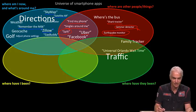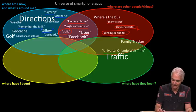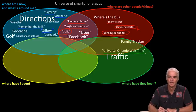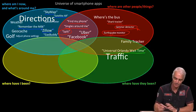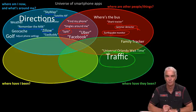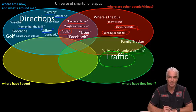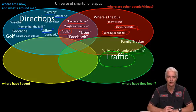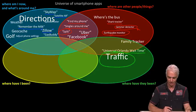Apps in the 'where have people been' category include Universal Orlando's app for Universal Studios theme park in Florida, which lets everyone see queue times for different rides. But by far the most important use of 'where are other people and where have they been' is generating traffic maps, which are becoming more and more widely used around the world and actually help all of us and the environment by showing where there's traffic so we can avoid it and use less fuel.